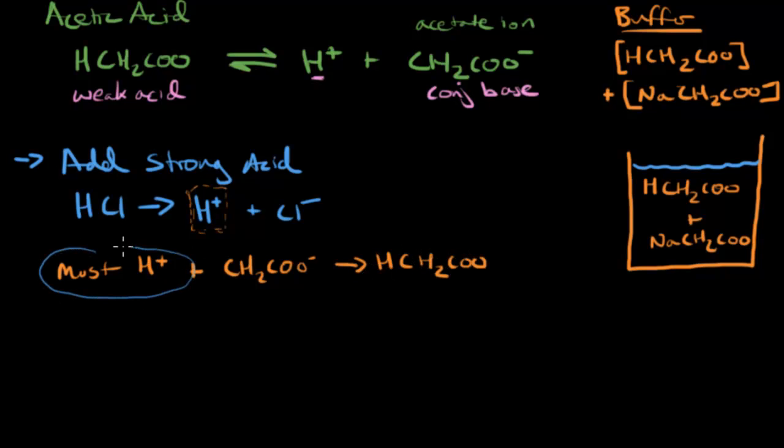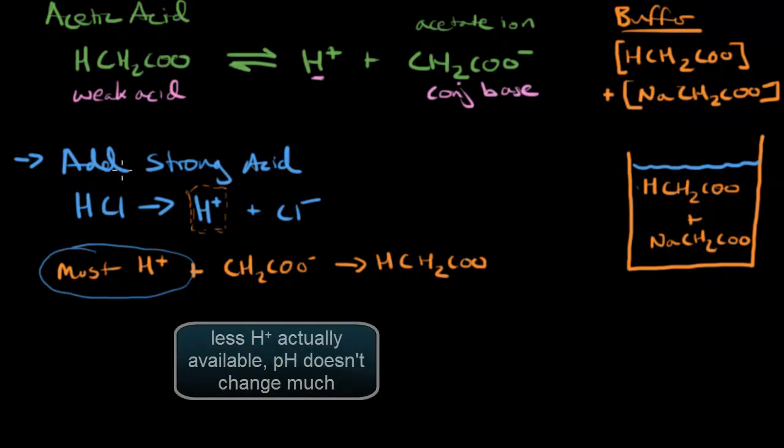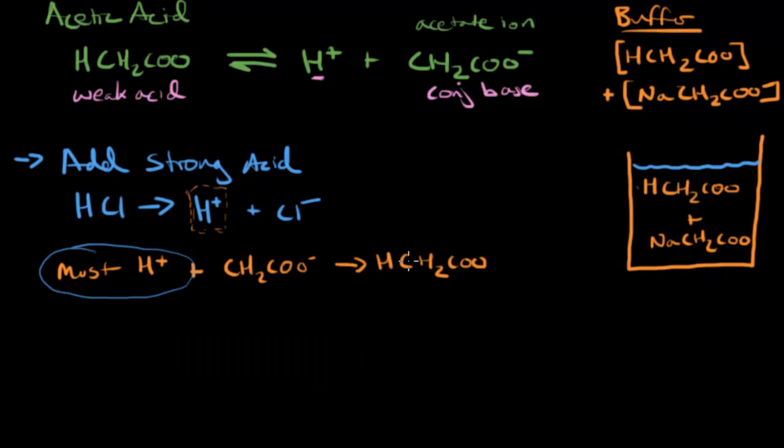So if most of the H plus is used in this reaction to create more acetic acid molecules, which by the way, acetic acid is one of the components to the buffer, if most of the H plus is used up in this reaction, then there won't be H plus freely floating around, meaning adding a strong acid did not result in an increase of hydrogen ions. So I won't really see the pH change by that much. This will be a small change, but not nearly as much as we would see if these H plus ions from the strong acid were all just floating around.